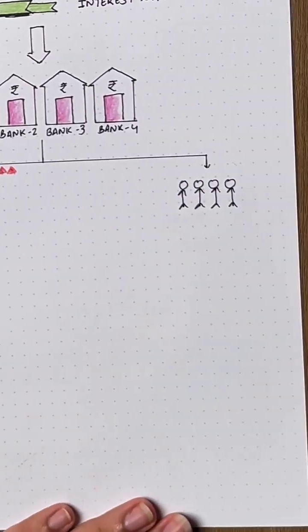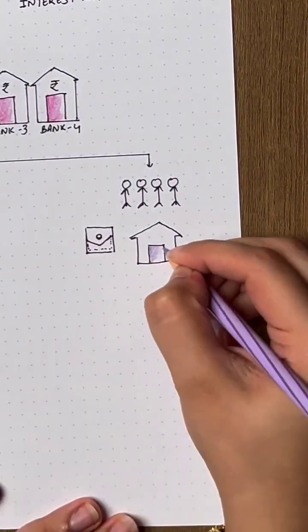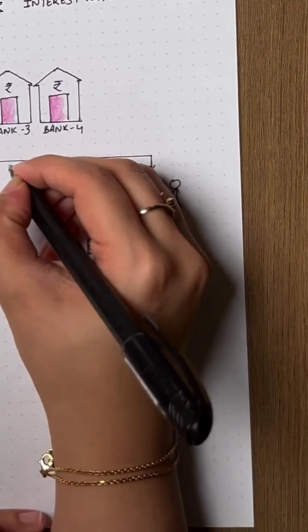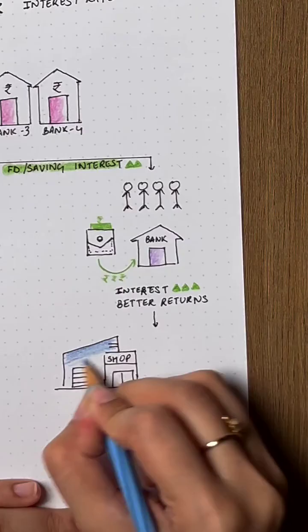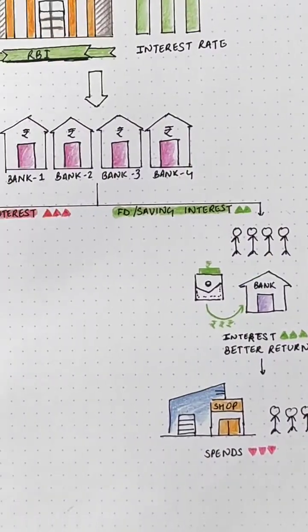At the same time, higher interest rates make savings into the bank more attractive. So, people start moving their money into FDs and saving accounts for better returns. This means less spending in the market and more money sitting with the banks.